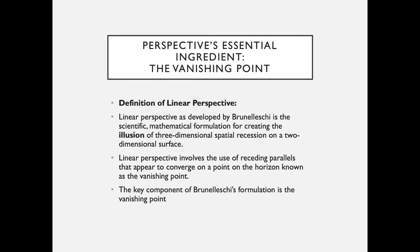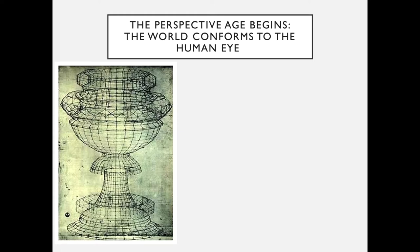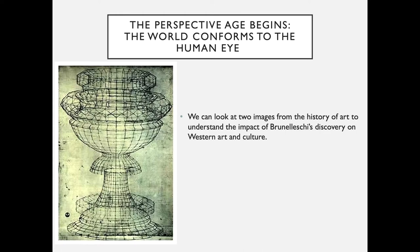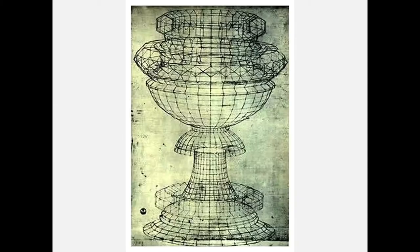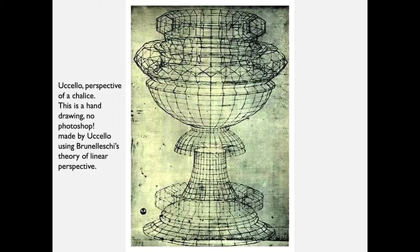The perspective age begins: the world conforms to the human eye. We can look at two images to understand the impact of Brunelleschi's discovery on Western art and culture. The first, completed within ten years of the introduction of perspective, is a drawing by Paolo Uccello, a Florentine artist who was a friend of Brunelleschi's — Uccello's Perspective of a Chalice. This is a hand drawing with no Photoshop, made with pen and ink using Brunelleschi's theory of linear perspective. Uccello's drawing shows how perspective could picture man-made and natural forms with a proportional and measurable sense of objectivity.